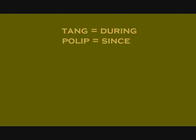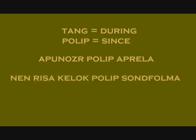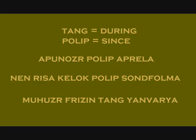For months we need two different prepositions: tang meaning during, and polyp meaning since. To say that an action has been occurring since a time and is still happening, you use the present progressive. For example, 'apunoser polip aprela' means it's been raining since April, or 'men risa kelloch polip sund folma' means the man has been running since Saturday. To say that an event habitually occurs during a certain time, you use tang with the nomic. For example, 'muhuzer frisen tang yang varia' means it's cold during January.